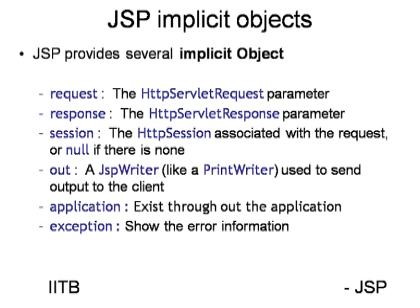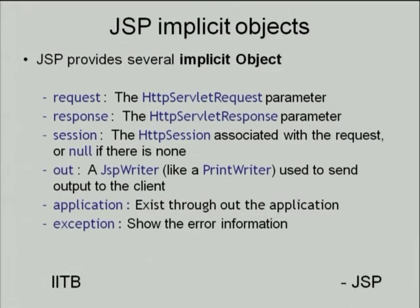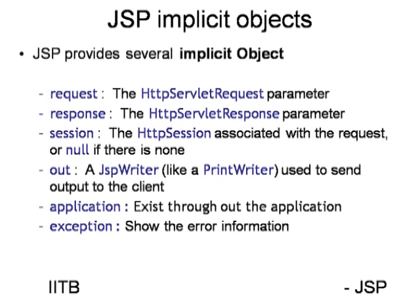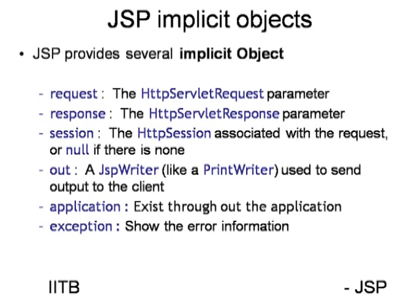Next are the JSP implicit objects. JSP pages have built-in request and response objects by default, and many implicit objects are available. The first is the request object — when a client requests any data that is a request. For example, on Google's home page you enter data in the search text box and press Search; the data from the search box goes to another page as a request parameter. The response object is used when you want to send back a result for a particular request.